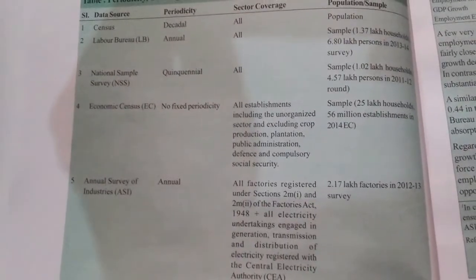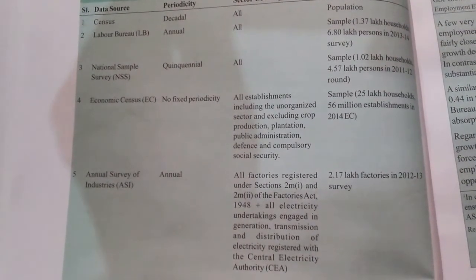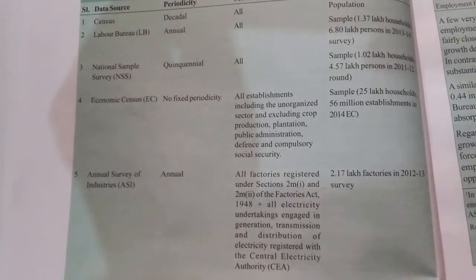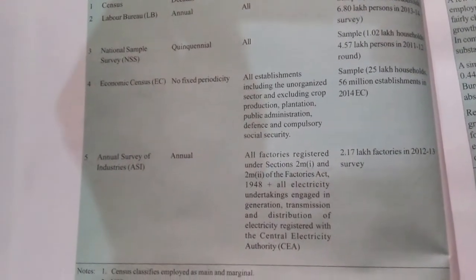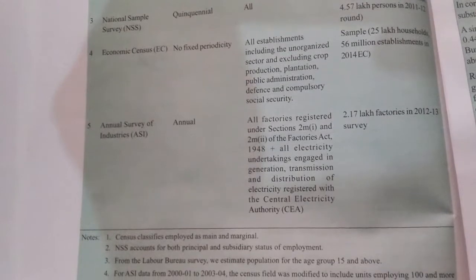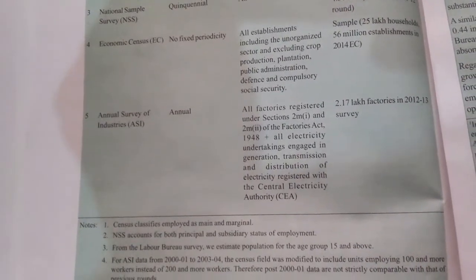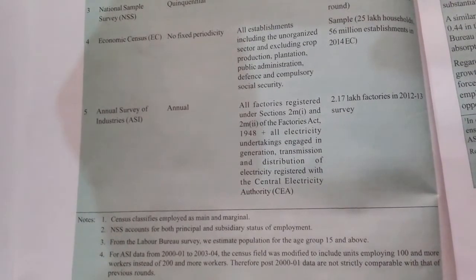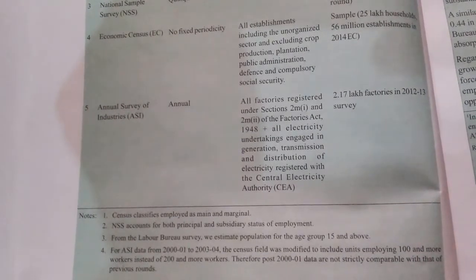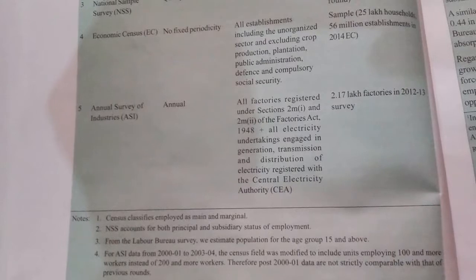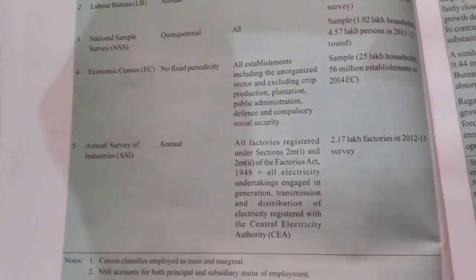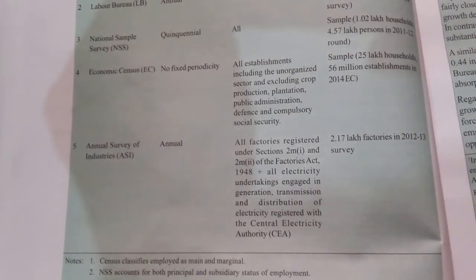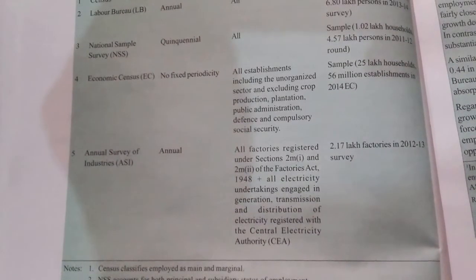In the Labor Bureau definition, 15 years of age is the threshold for calculating unemployment. In the Annual Survey of Industries, the census was modified to include units employing 100 or more workers instead of 200 or more workers in the past. Therefore, any establishment with 100 or more workers is now included in ASI.